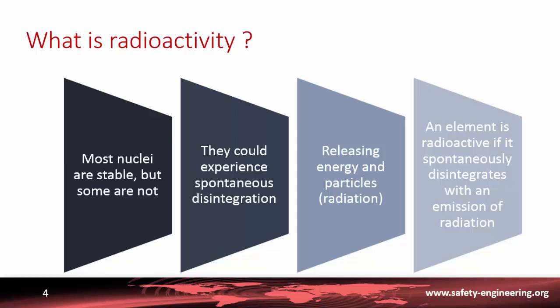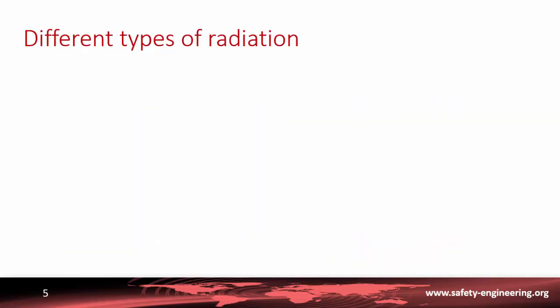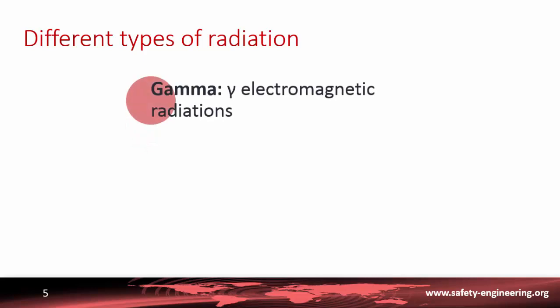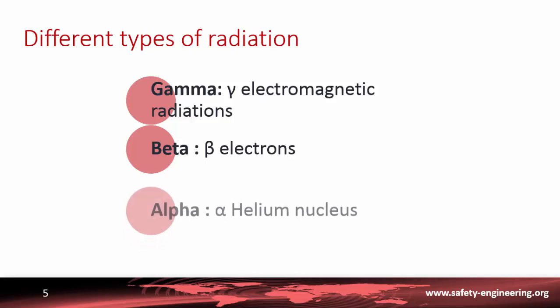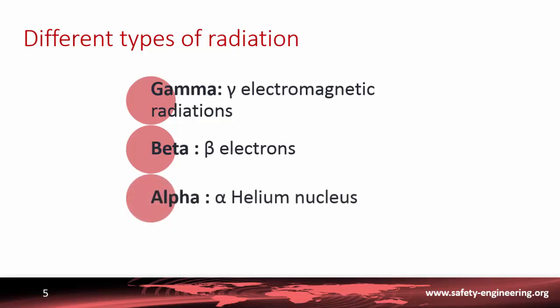An element is radioactive if it can disintegrate spontaneously with an emission of radiation. There are different types of radiation, that is, different types of particles to be emitted. The first is the gamma ray, which is an electromagnetic radiation. The second type is called beta and is composed of electrons. The third is called alpha, and alpha particles are actually helium nuclei. And then there are the neutrons.